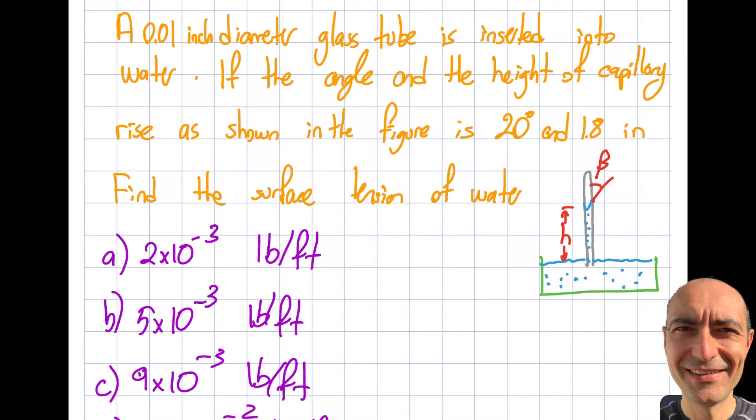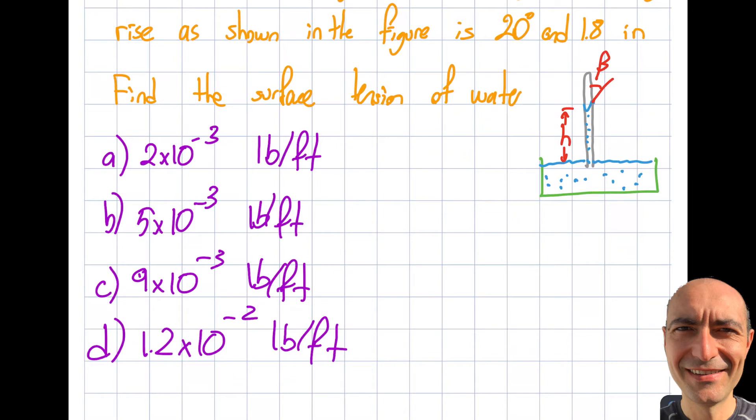So what I do is I simply go ahead and look at page 177 of the manual and I got myself this equation: h is equal to 4 times the surface tension times cosine of this angle they call it beta, sometimes called theta, divided by the specific weight times the diameter.